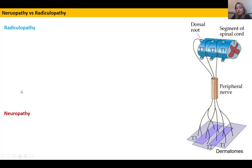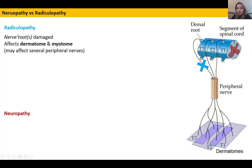To start off we should understand the difference between a radiculopathy and a neuropathy. A radiculopathy — the word 'radicule' refers to the root, the nerve root. It refers to damage to that nerve root, and what it's going to do is affect the downstream dermatomes and myotomes — the skin and the muscles associated with that nerve root that are innervated by it.